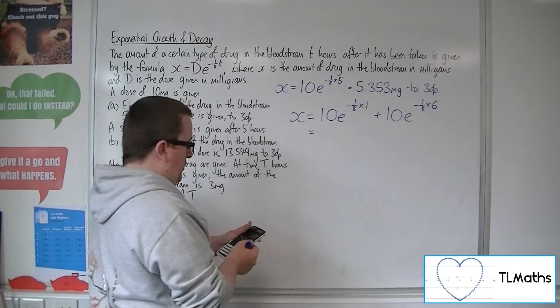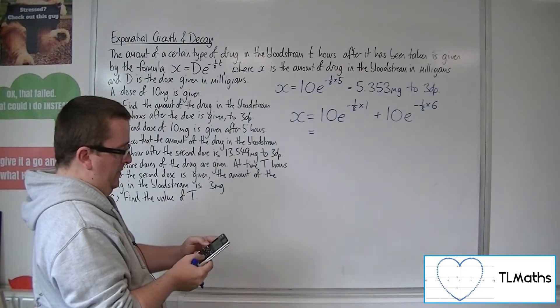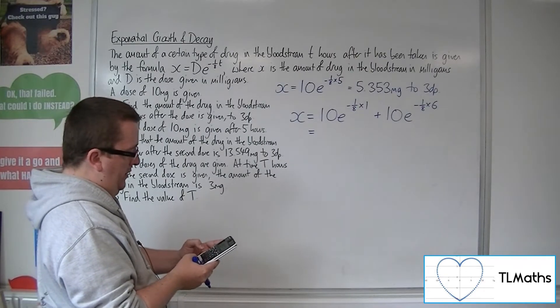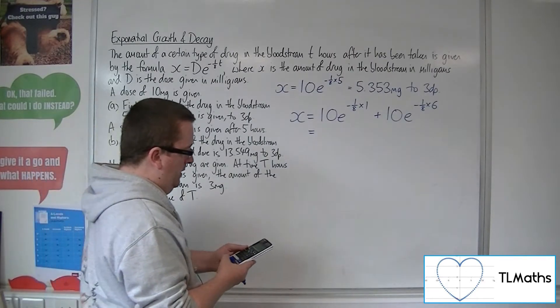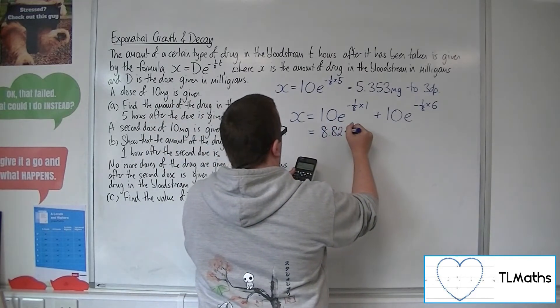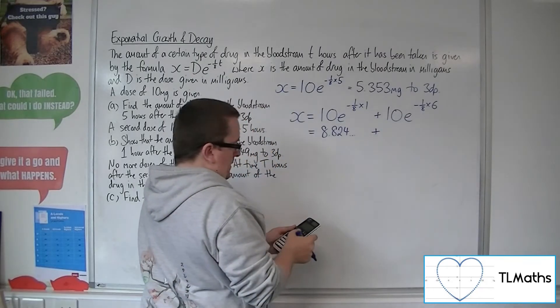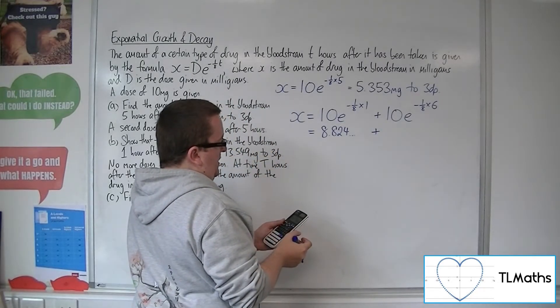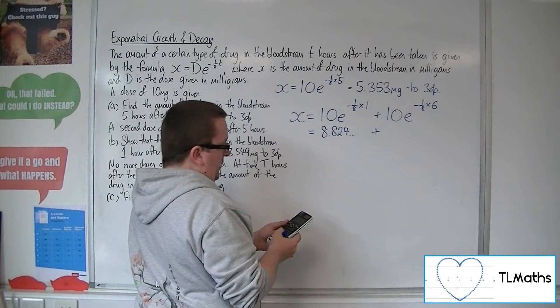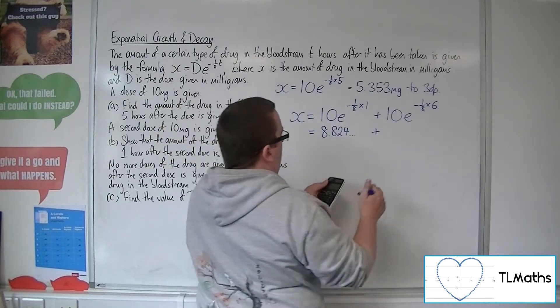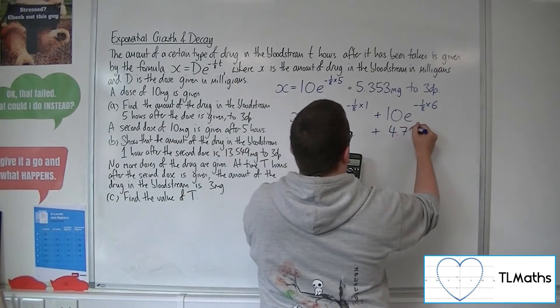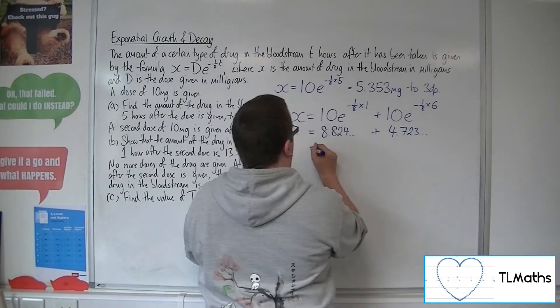So we've got 10 times e to the minus one-eighth times six is 4.723, et cetera.